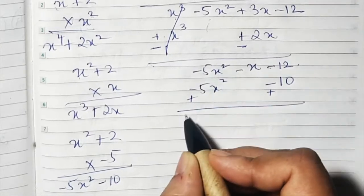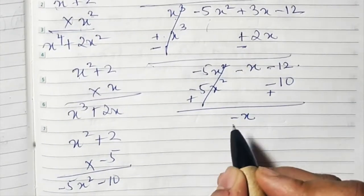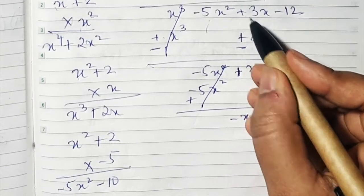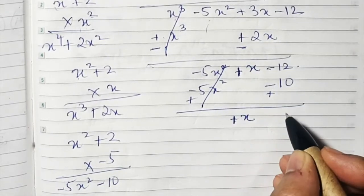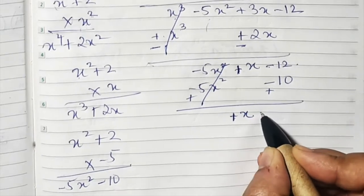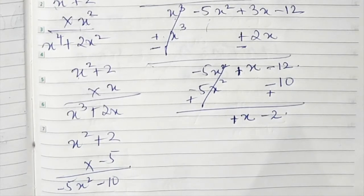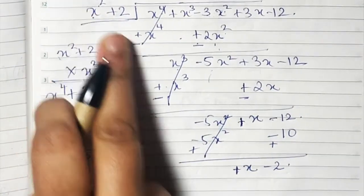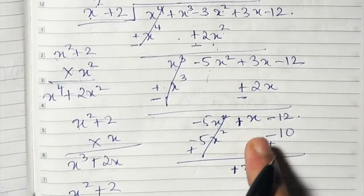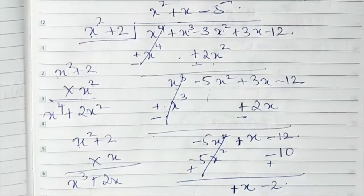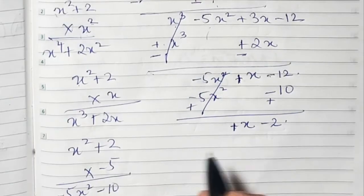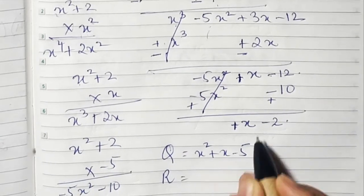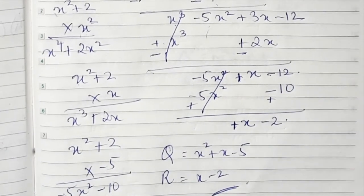We have -5x² so multiply x² + 2 by -5: -5 × x² = -5x², and -5 × 2 = -10. Write -5 in the quotient. Signs change; -5x² and +5x² cancel. -x comes down and -12 + 10 = -2, giving remainder x - 2. Since x - 2 is smaller degree than x² + 2, we stop. The quotient is x² + x - 5 and remainder is x - 2.